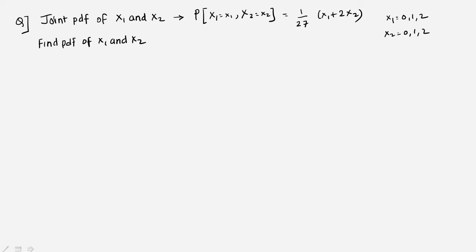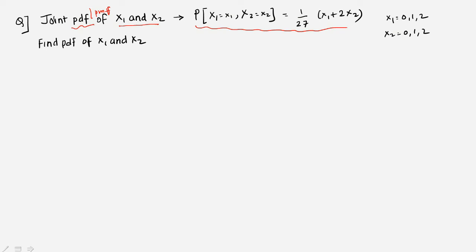In this video we will see how to solve a two-dimensional discrete random variable. The question gives the joint PDF of x1 and x2. PDF and PMF mean the same thing — probability density function or probability mass function. The function is P(X1=x1, X2=x2) = (1/27)(x1 + 2*x2), where x1 and x2 each range over 0, 1, 2.